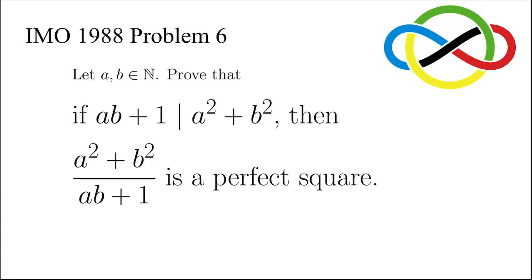Let's take a look at this very famous problem 6 of the International Mathematical Olympiad 1988. It says, let a and b be positive integers. Prove that if ab plus 1 divides a squared plus b squared, then a squared plus b squared over ab plus 1 is a perfect square.